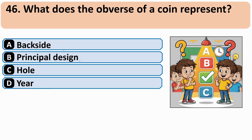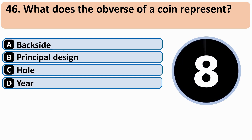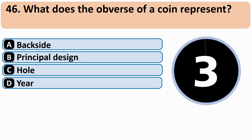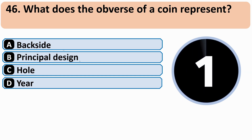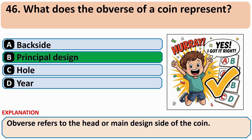What does the obverse of a coin represent? The correct answer is B — Principal Design.